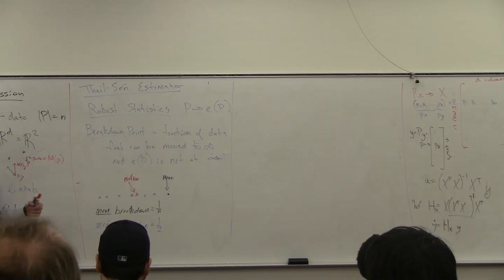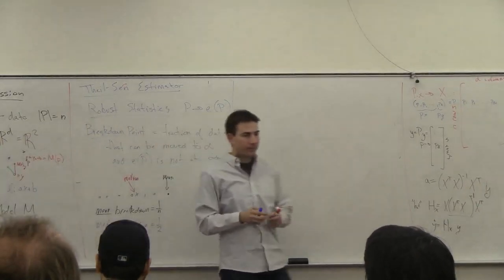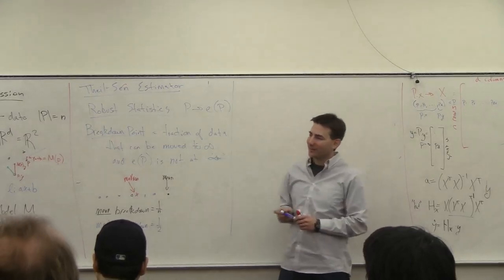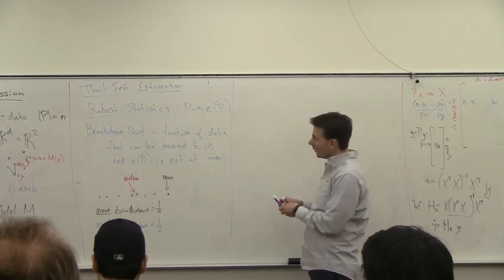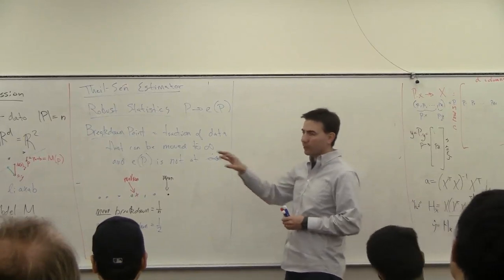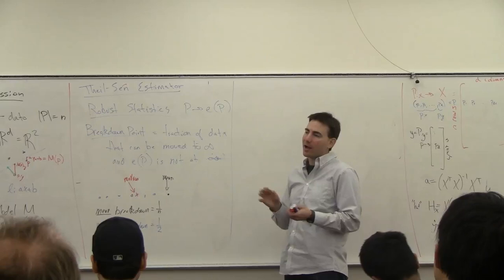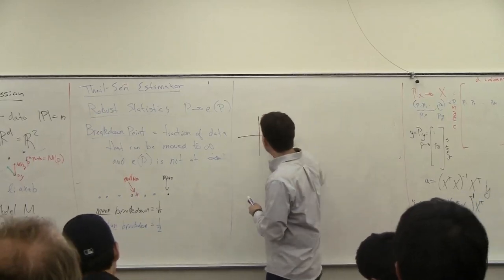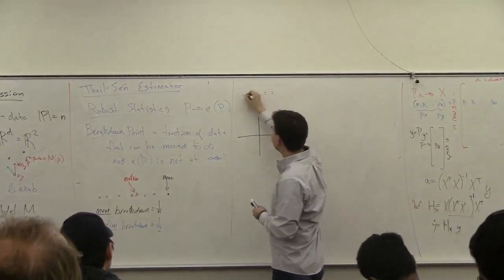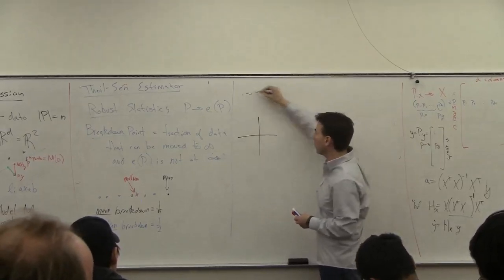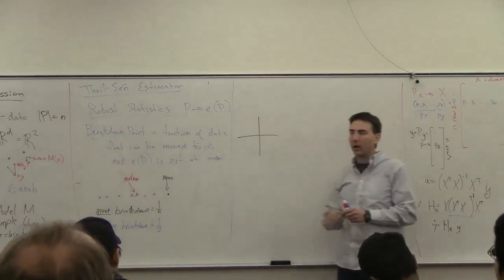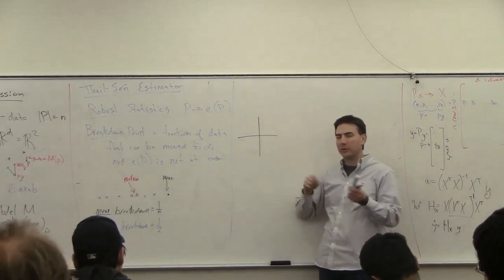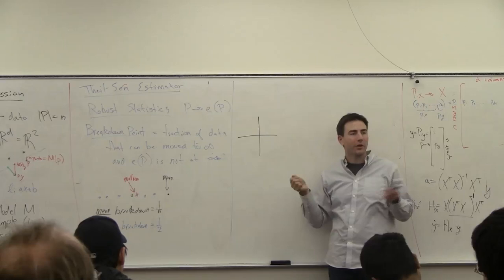We're going to use some version of the median but on slopes. Anyone have a guess? If we calculate the slope from the origin to each of the points and then take the median slope — that works if the points are centered around the origin. But if the origin is here and all your points are off to the side, this is not going to work. You want to do something where you look at slopes and take the median, but not from the origin. What are other options? Between points.